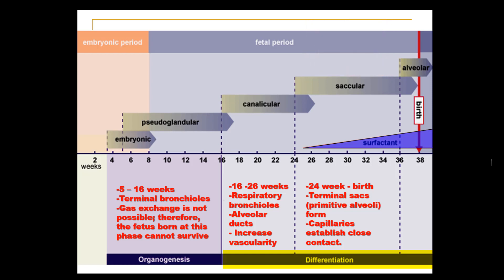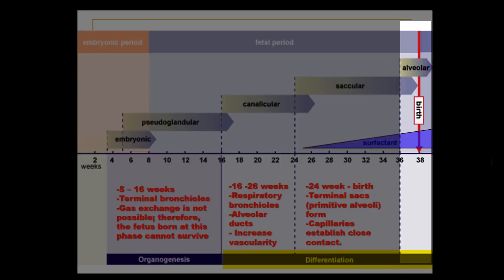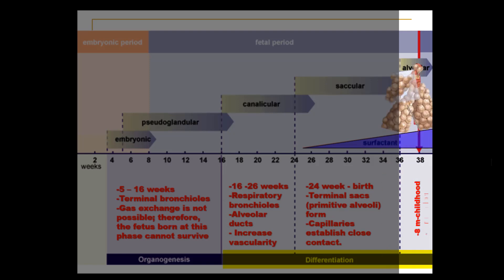The final stage of lung maturation is the alveolar stage, which extends from 8 months of pregnancy until the early years of childhood life — possibly up to 8 years of age. In this stage, more alveoli are added and further maturation of the lung is achieved.